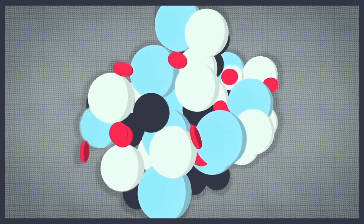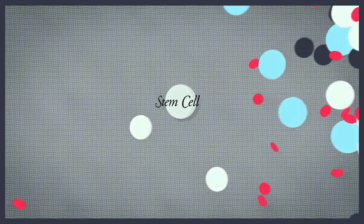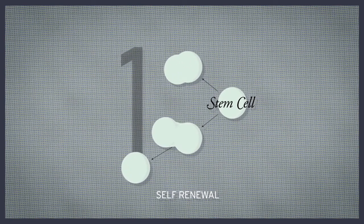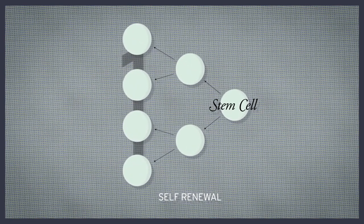These experiments revealed two defining properties of a stem cell. First, a stem cell must be able to self-renew. That is, it must be able to divide and give rise to more cells like itself.